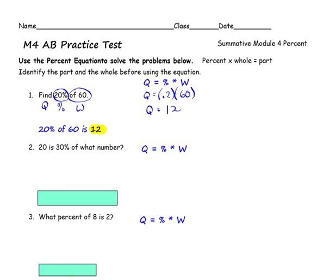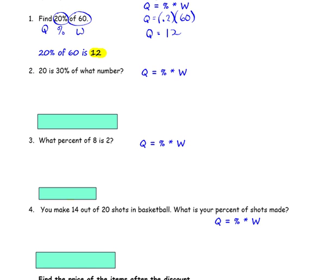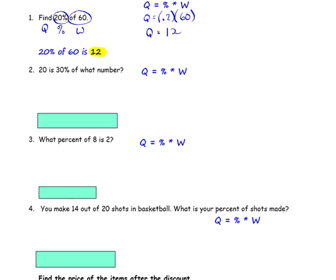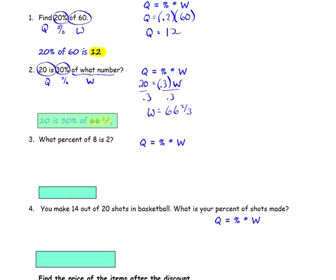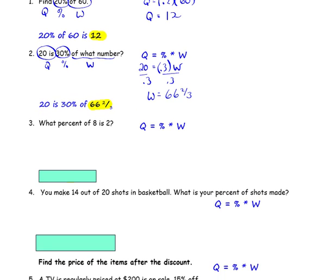Number 2: 20 is 30% of what number? Solve by identifying the important parts. 30% is your percent, 20 is the quantity, and 'what number' is the whole. We substitute 20 for the quantity, 0.3 for the percent, and a variable for the whole. Divide both sides of the equation by 0.3 to solve. W is equal to 66 and two-thirds. So 20 is 30% of 66 and two-thirds.